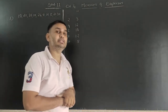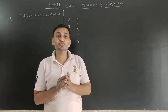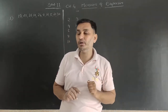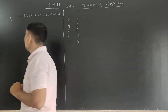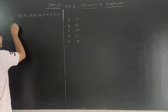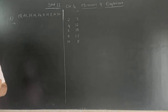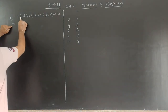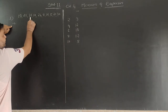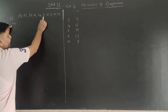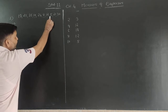First, to find the quartiles, we arrange the observations in ascending order. Arranging in ascending order: 5, 8, 10, 12, 18, 19, 20, 24, 25, 30, 35.